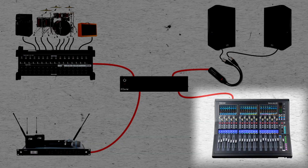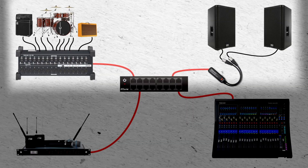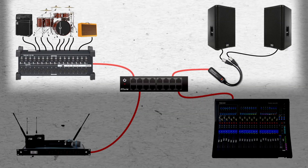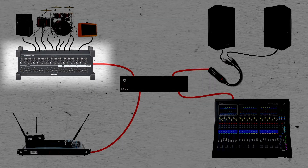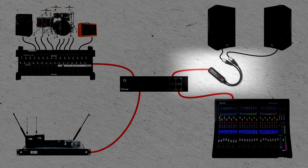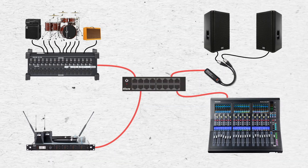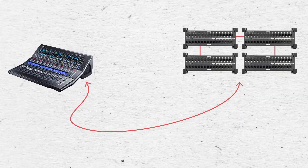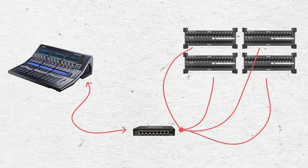Let's say we have some inputs on stage, a pair of powered speakers, and a mixer. The mixer has Dante built in, so we can connect it directly to the network switch. Meanwhile, the inputs on stage and the powered speakers only have analog audio connections. To connect the microphones to the network, we can use a stage box with Dante connections, and to connect the powered speakers, we can use a Dante AVO analog output adapter. The analog audio inputs and outputs connect to the Dante devices with XLR cables, and the Dante devices connect to the network switch. For clarity, let's use a standalone network switch rather than connecting the mixer directly to the stage box.